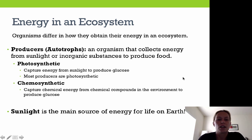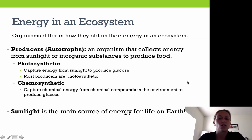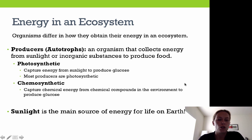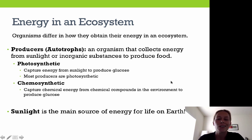Organisms differ in how they obtain their energy in an ecosystem. Producers, also referred to as autotrophs, are organisms that collect energy from sunlight and possibly some inorganic substances to produce their own food. A photosynthetic producer captures energy from sunlight to produce glucose, and the majority of producers on the planet are photosynthetic. There are also chemosynthetic organisms that capture chemical energy from chemical compounds in the environment to produce glucose. We typically find chemosynthetic organisms down in deep sea ocean vents, where sunlight cannot penetrate to the ocean floor, so they use inorganic substances to survive and make their own food.